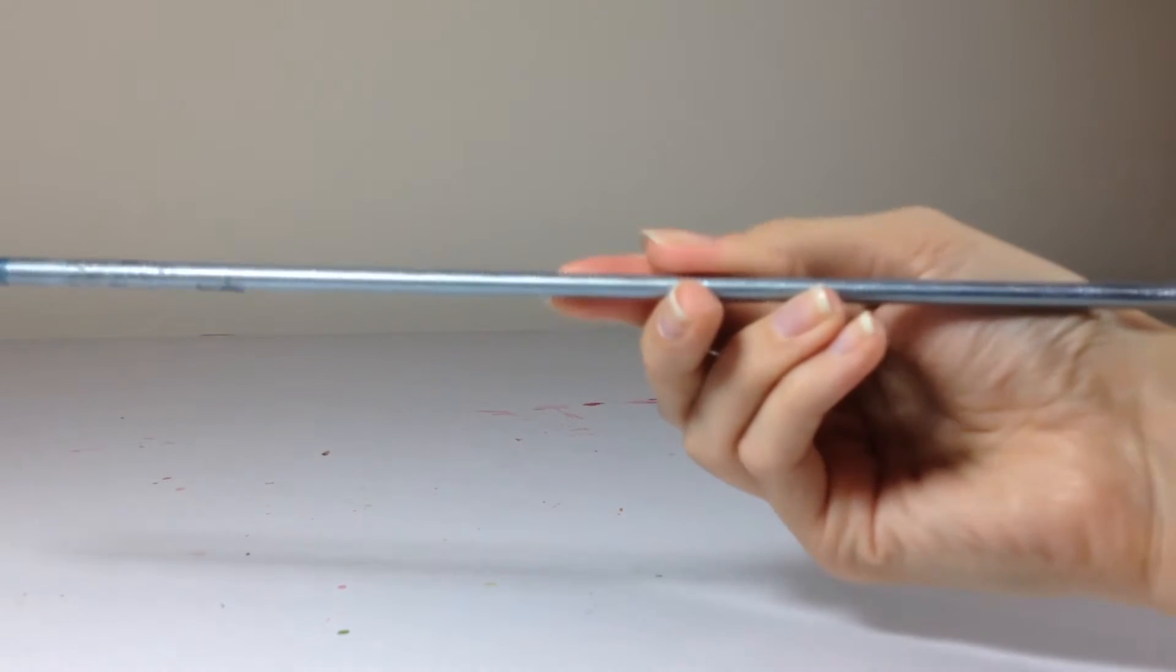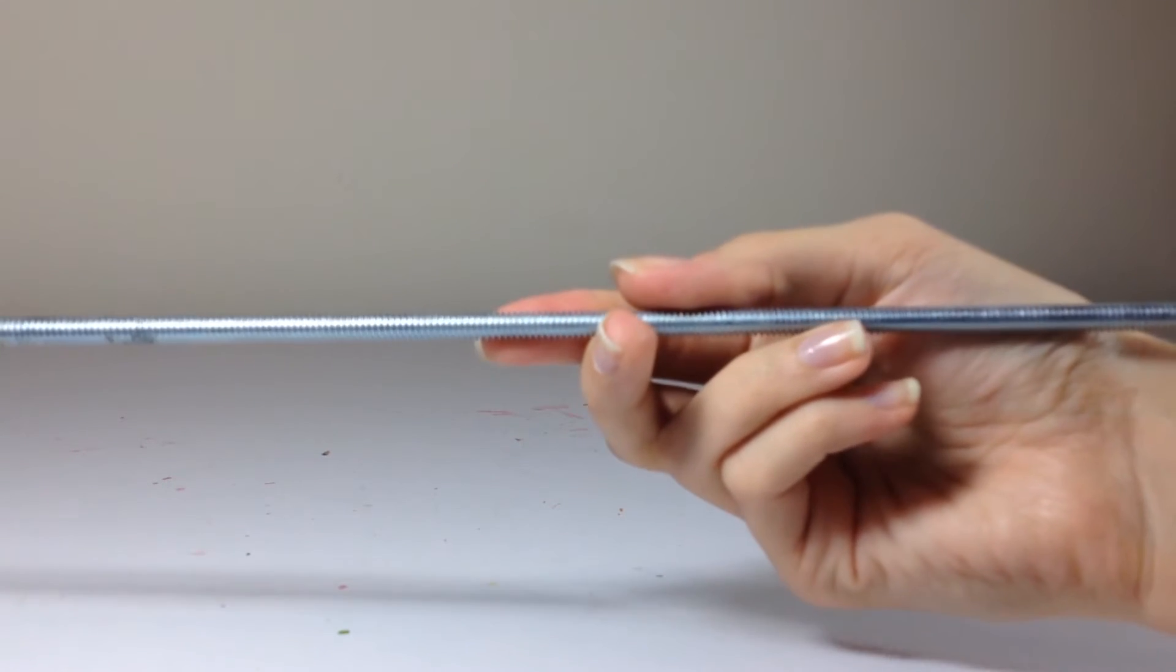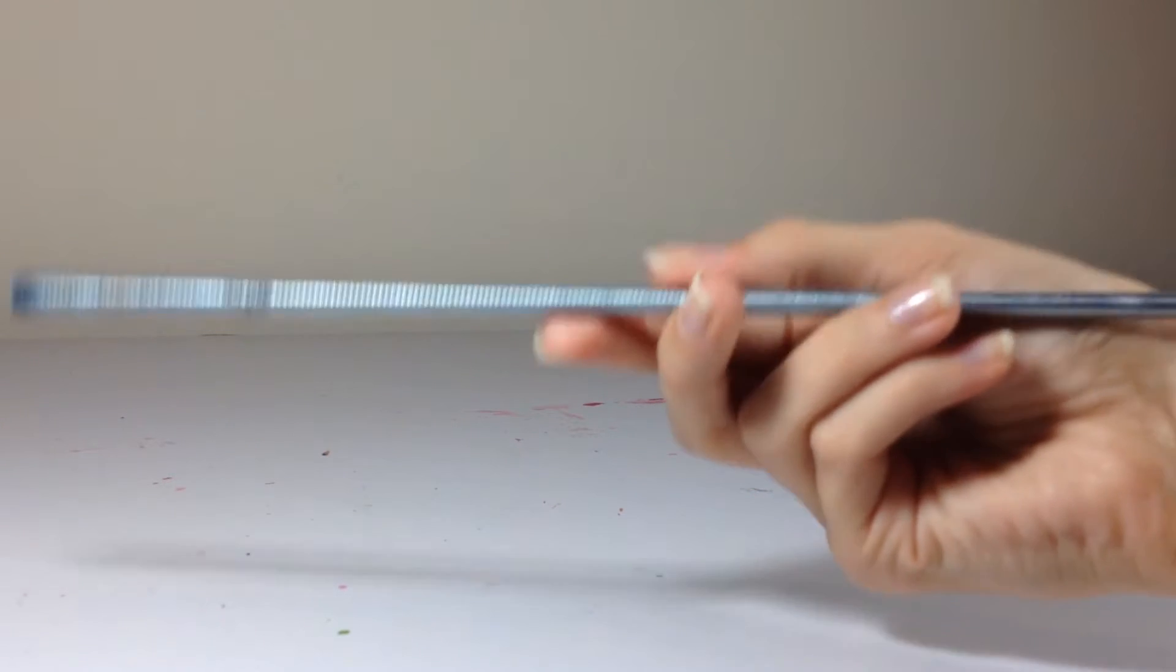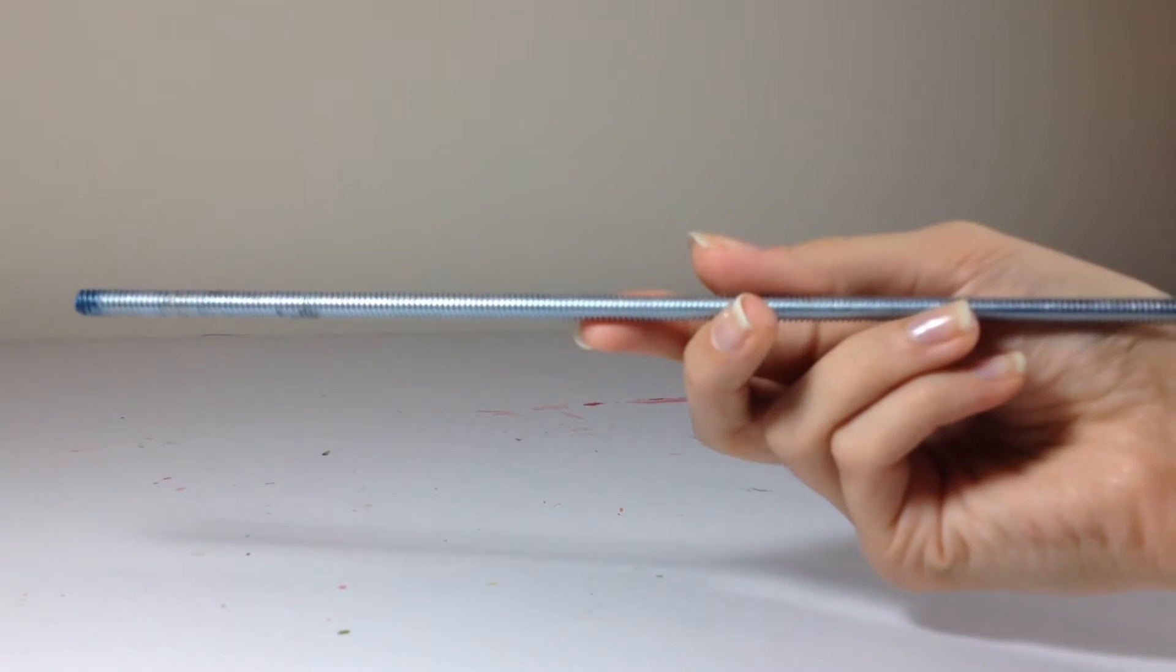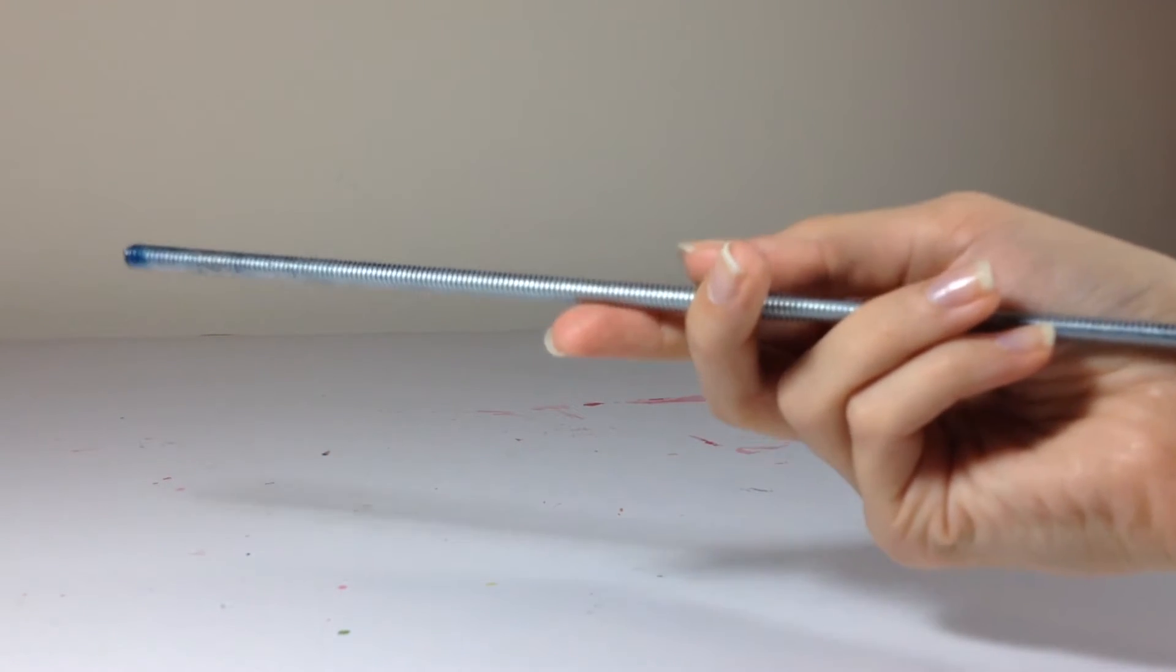And then you will also need a threaded rod, quarter inch size so that it will fit inside the coupling nuts. And these come in different lengths too. This is just 12 inches. You can get 24, so depending on how long you want your arm.